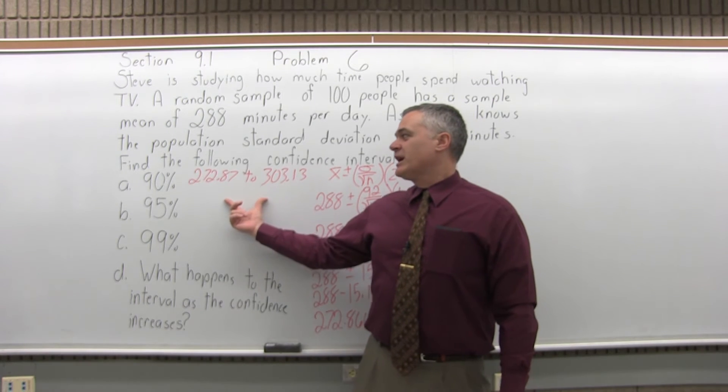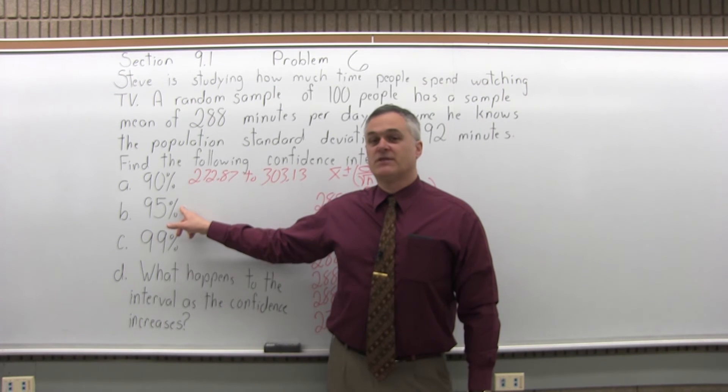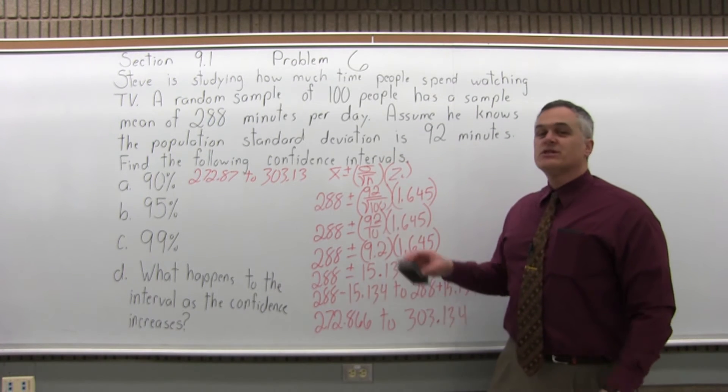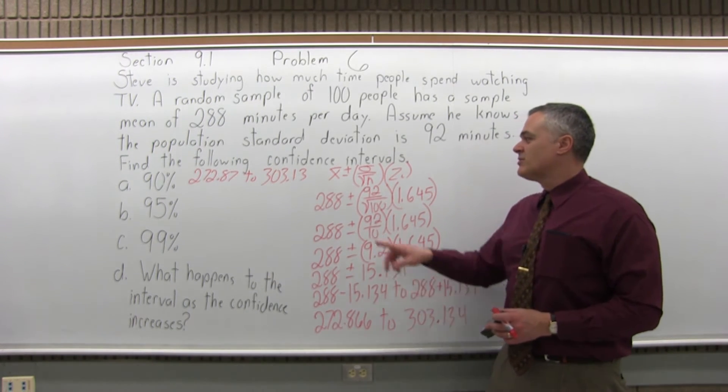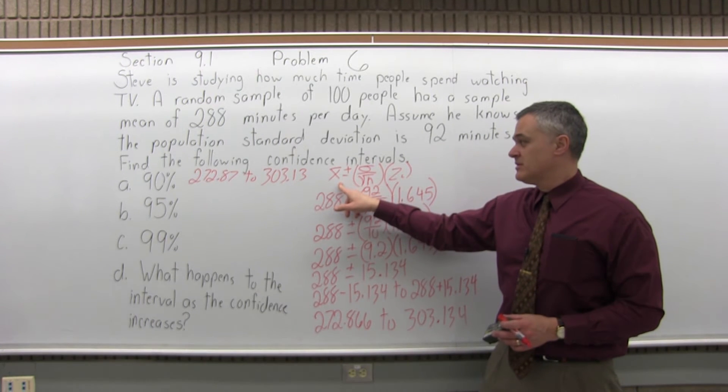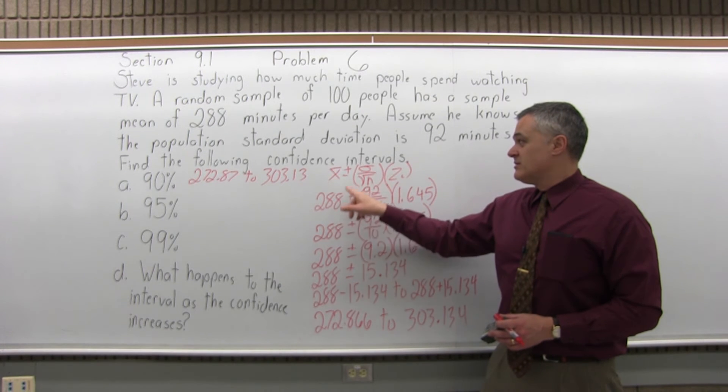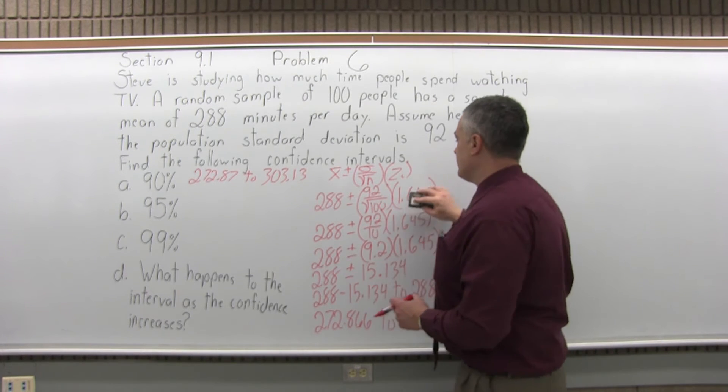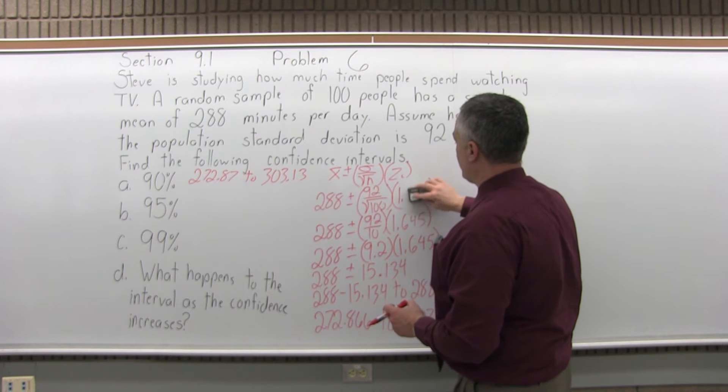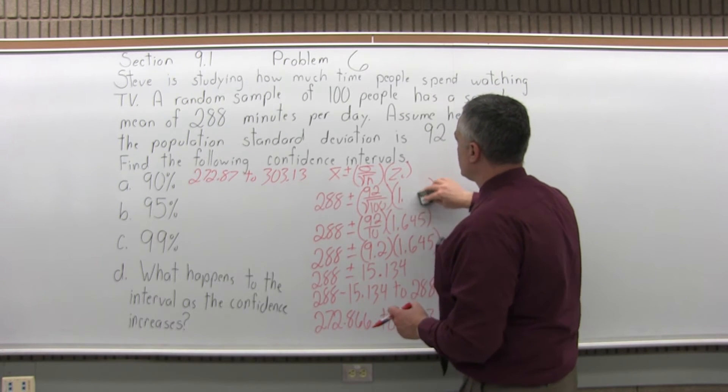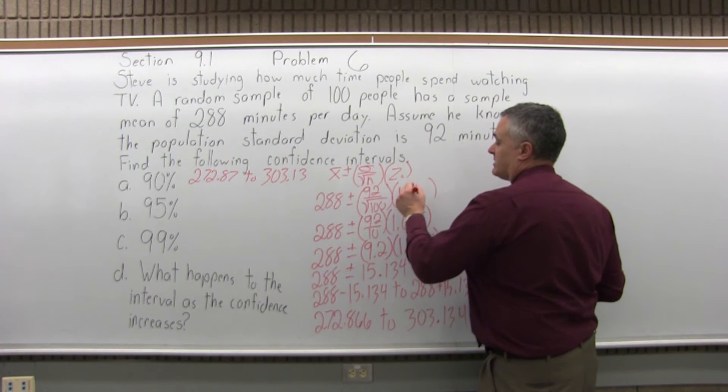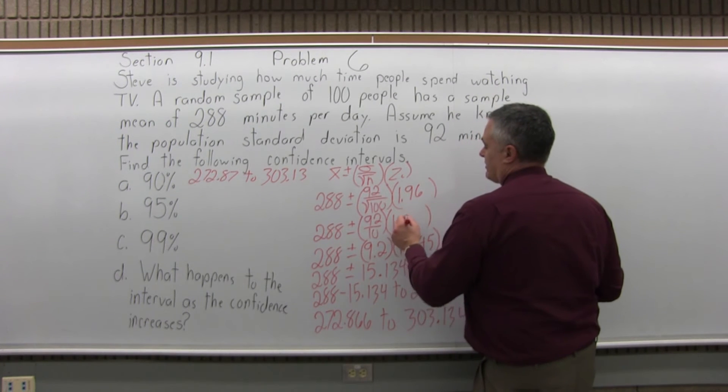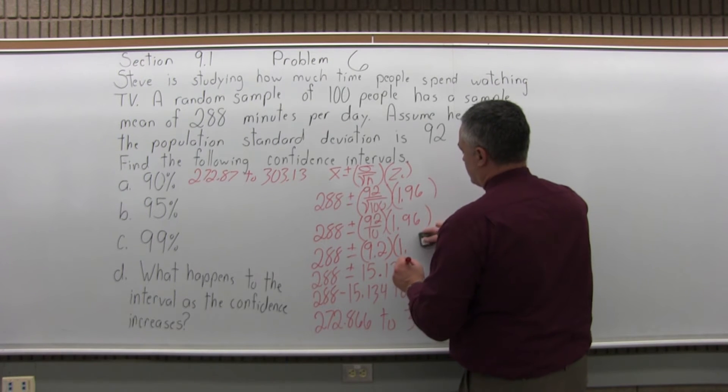What type of interval do I get if I'm interested in having 95% level of confidence instead of 90%? The formula stays the same. The sample mean is still 288, the population standard deviation sigma is still 92, and the sample size is still 100. The only thing that changes is the confidence coefficient. For 95%, it's 1.96 instead of 1.645.